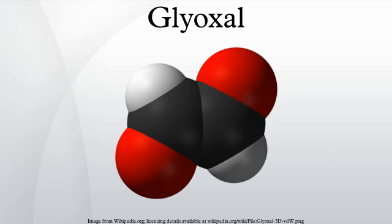Glyoxal is an organic compound with the formula OCHCHO. It is a yellow-colored liquid that evaporates to give a green-colored gas. Glyoxal is the smallest dialdehyde. Its structure is more complicated than typically represented because the molecule hydrates and oligomerizes. It is produced industrially as a precursor to many products.